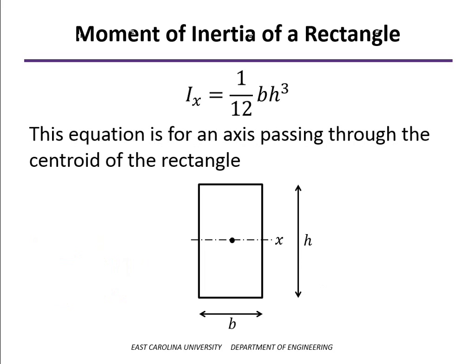For example, for a rectangle, the moment of inertia about an axis passing through the center, or the centroid, is 1/12 base times the height cubed.